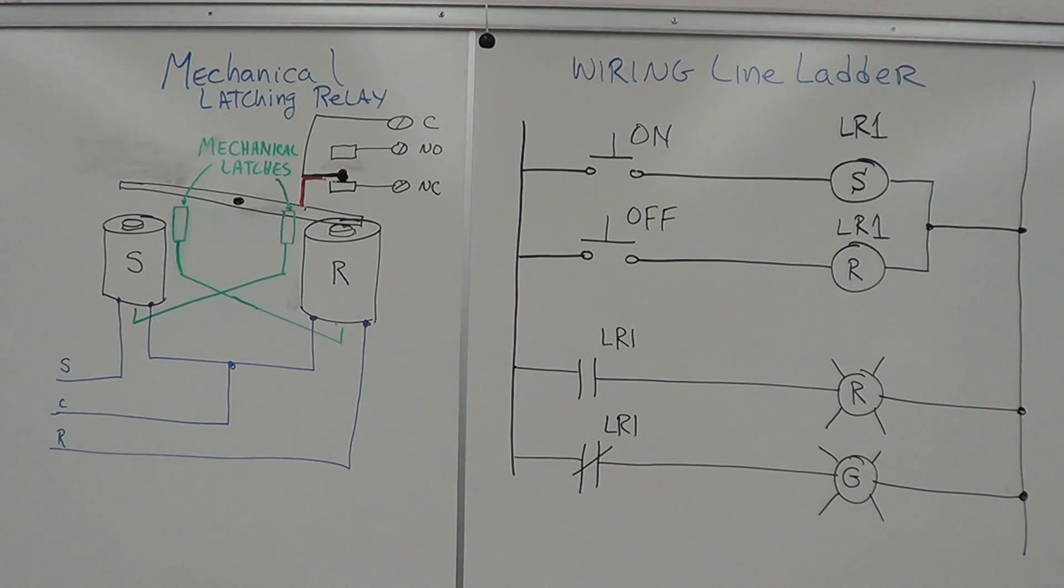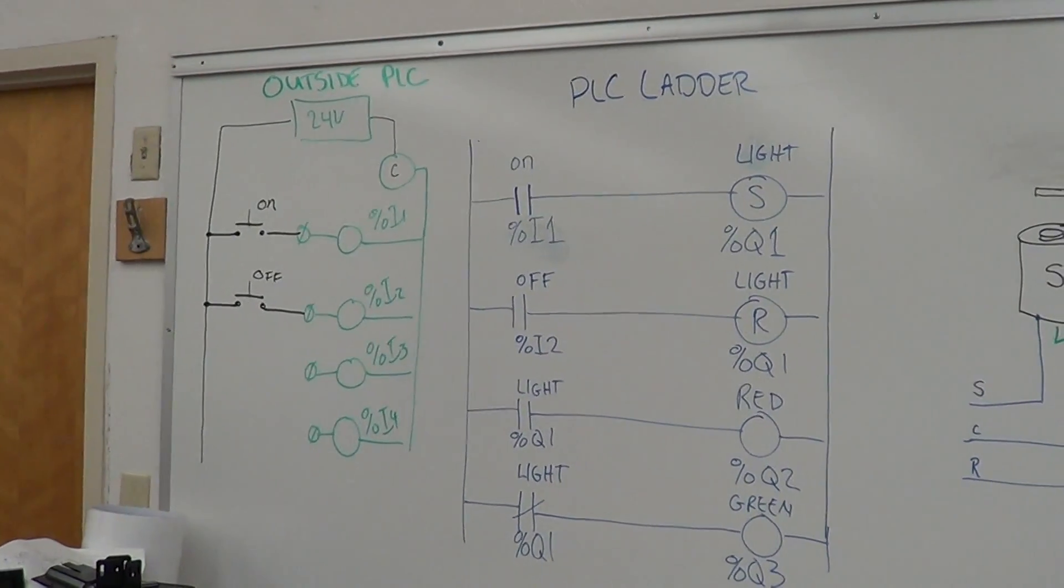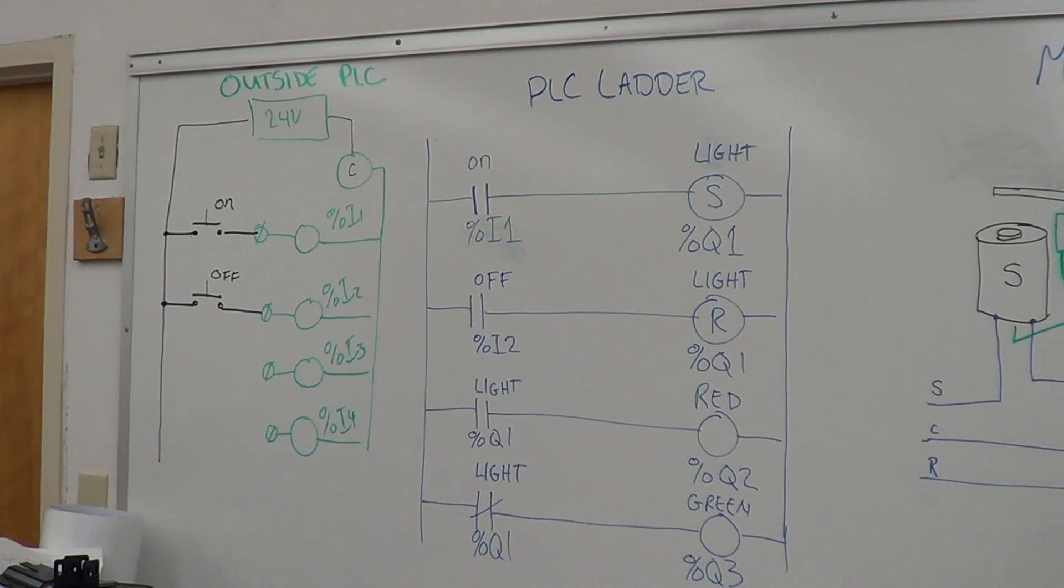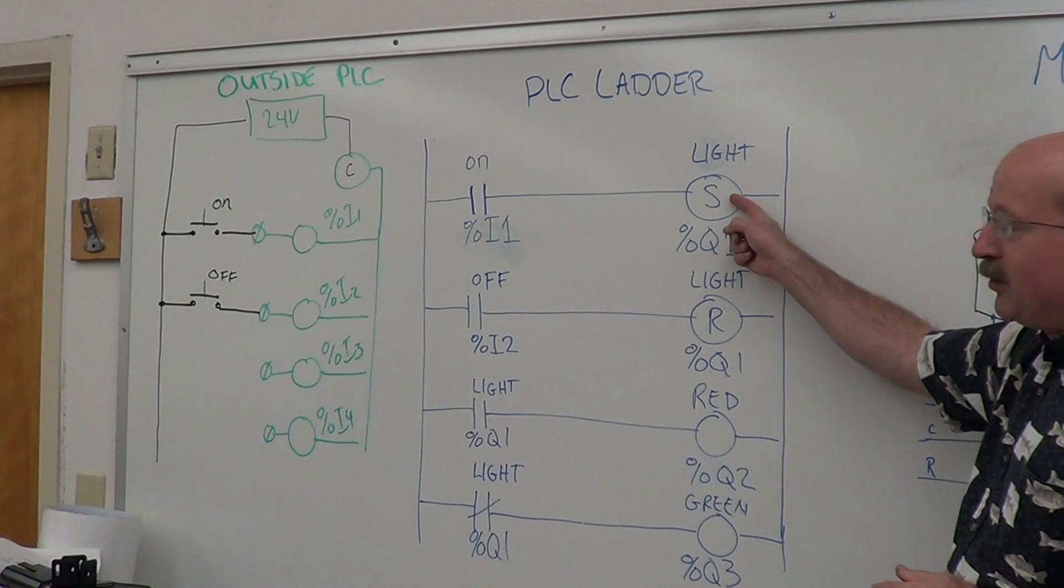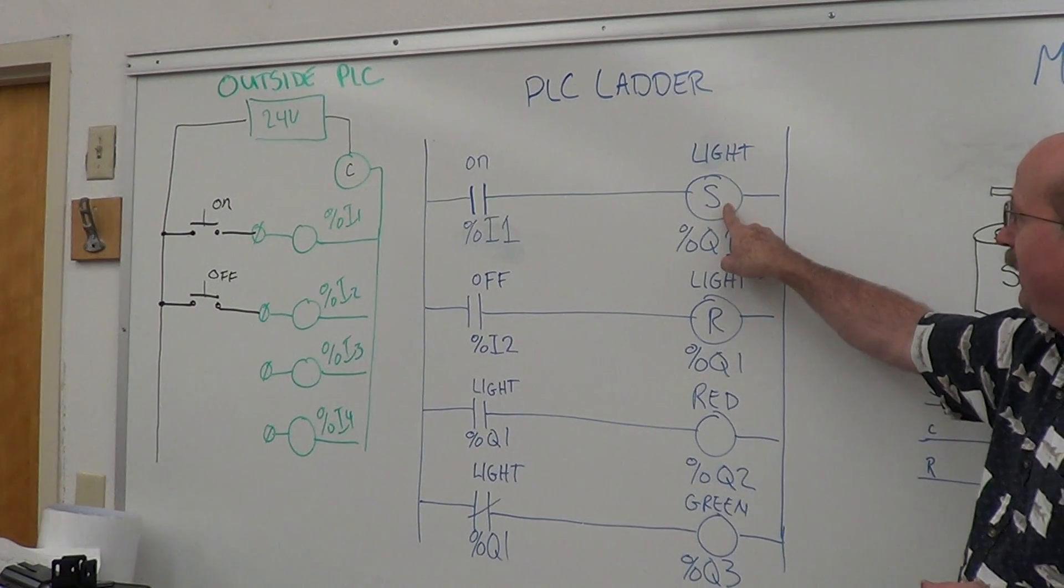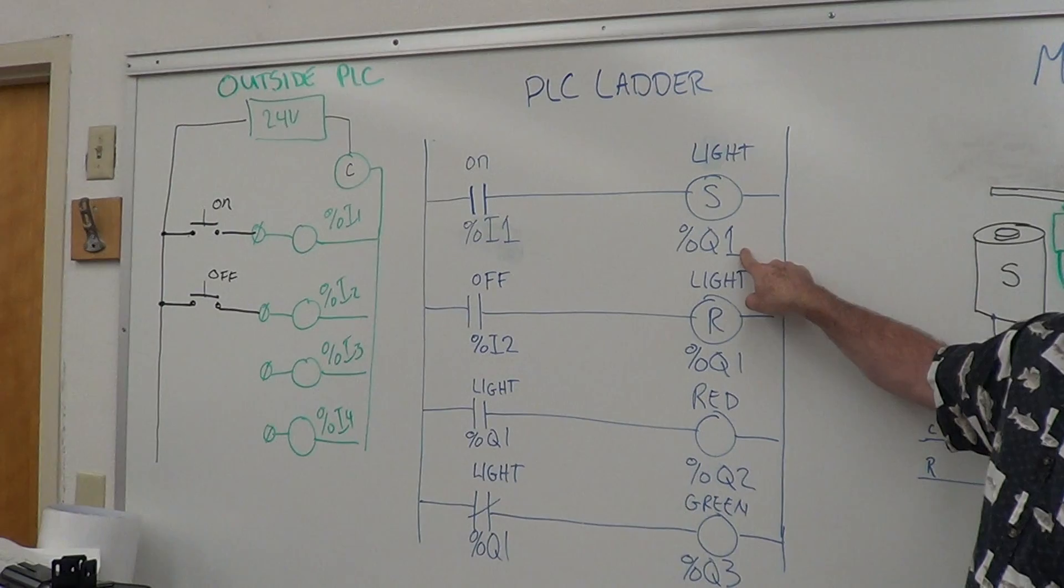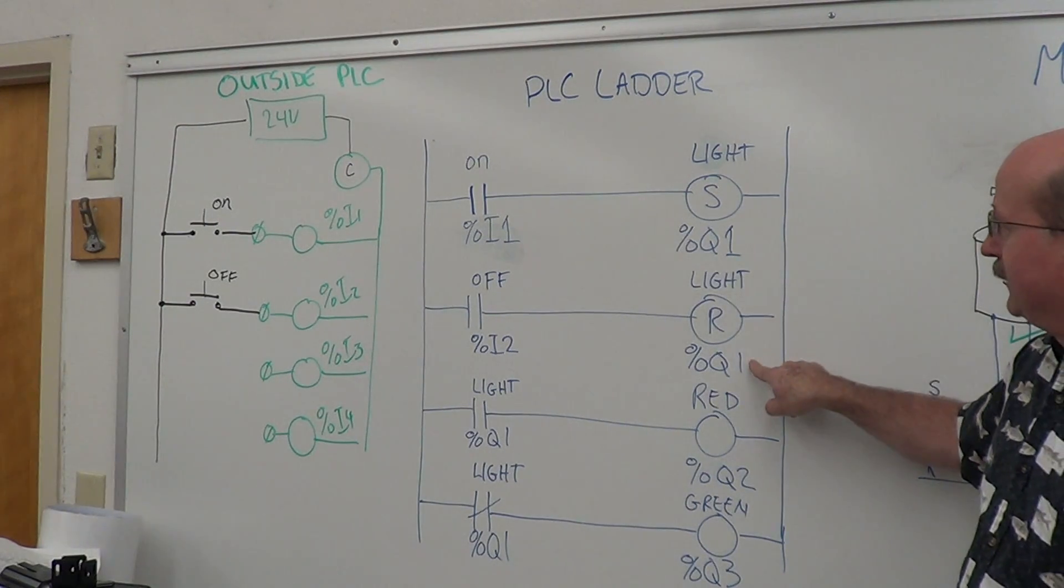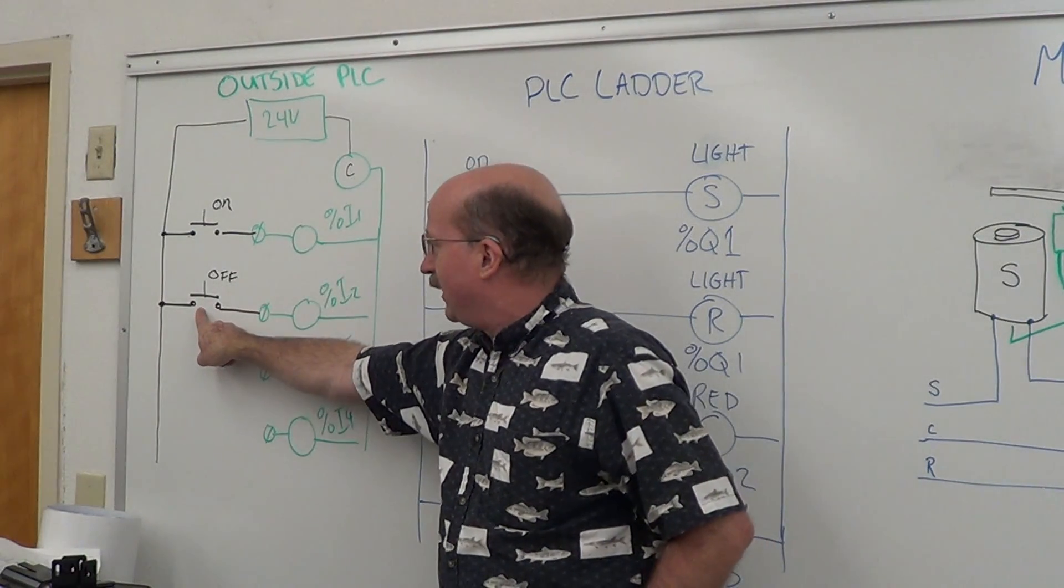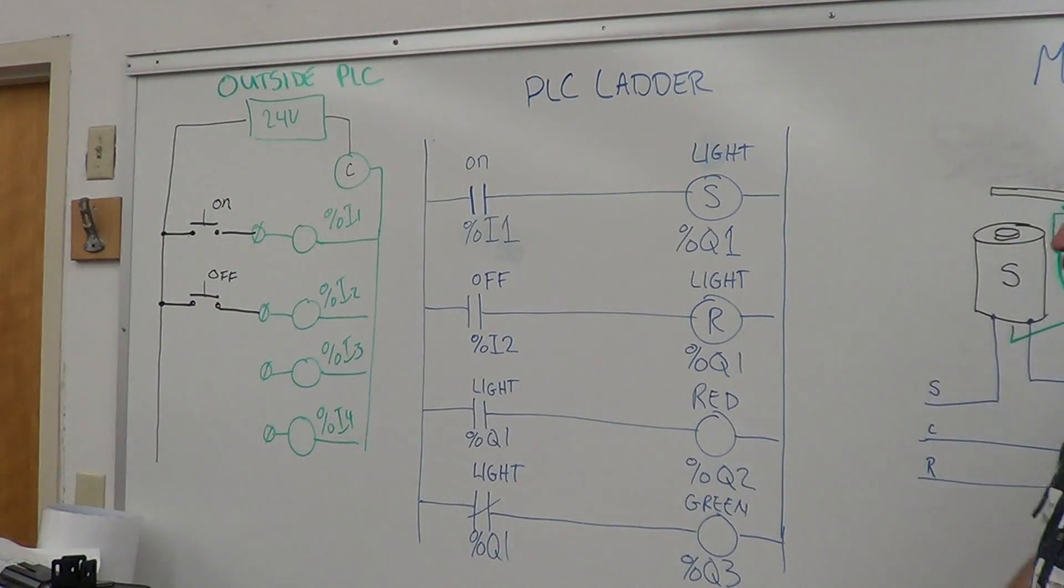Now if we go back over to the PLC, here's a similar setup we have. You have an output coil addressed to the same address. You've got a set coil, reset coil, addressed to output Q1. Over here on our input, we've got a push button connected up to input one, and another normally open push button connected up to input two.